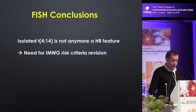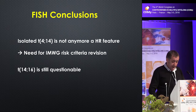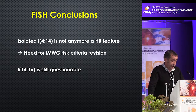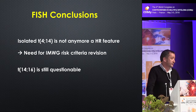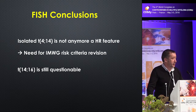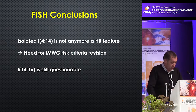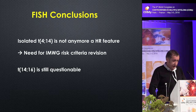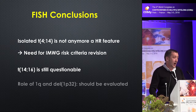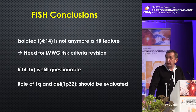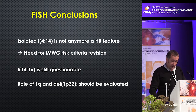To conclude this first part on FISH: t(4;14) alone is not anymore a high-risk feature, and so we need to revisit the IMWG. Again, t(14;16) is included in the IMWG with very low demonstration of its prognostic impact. It is really rare — 3% of patients — and you need thousands of patients to confirm the prognostic value of t(14;16). And then 1q gain and deletion 1p: we need more data to validate these two abnormalities.